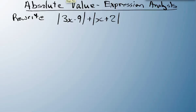3x minus 9 equals zero when x equals 3. On the right-hand side, this one equals zero when x equals minus 2.